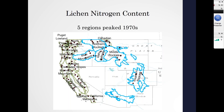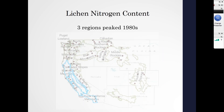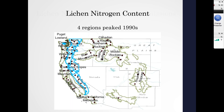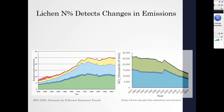We saw that increase, and it peaked for five regions in the 1970s — those five regions occurred mostly in the Rockies and the eastern part of the western U.S. In three other regions, we saw that peak in nitrogen content occur in the 1980s and then a subsequent decrease, along the California coast — some of our most western regions. The remaining four regions had that nitrogen content peak in the 1990s, occurring along the Cascades and Sierra Nevada. The lichen nitrogen content is really paralleling these changes in emissions — beginning in 1940, there was an almost exponential increase up until the 1970s, then it starts to plateau.